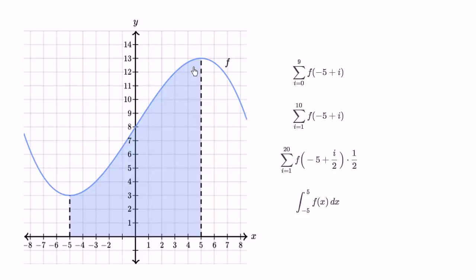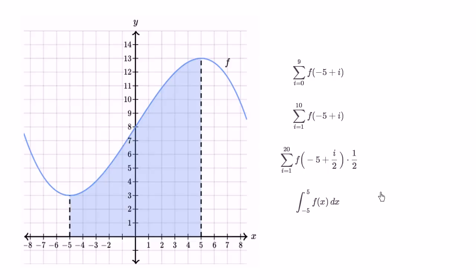So right over here we have the graph of f, and then we have four different expressions. What I encourage you to do is pause this video and see if you can figure out which of these expressions would give the largest quantity, the second largest quantity, the second smallest quantity, and the smallest quantity. I'm assuming you have paused the video and given an attempt. Now let's work through this together.